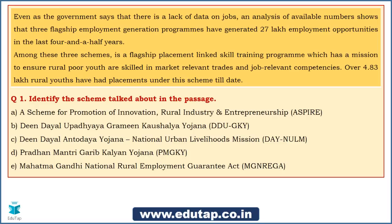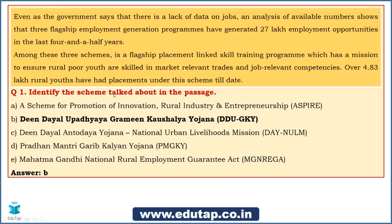The answer for this question is B — Deen Dayal Upadhyaya Grameen Kaushalaya Yojana. All these schemes are close enough, so there is a possibility of confusion with the options. You need to be very clear about the objective of each scheme. Also note that in the examination you will usually not get the full forms — only abbreviations will be used — so you need to be well aware of the full forms of the schemes as well.